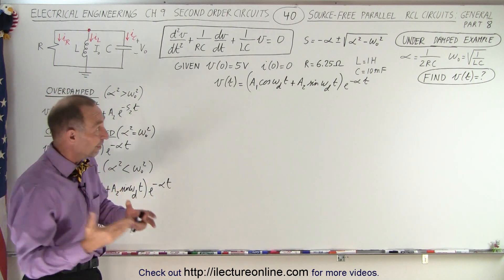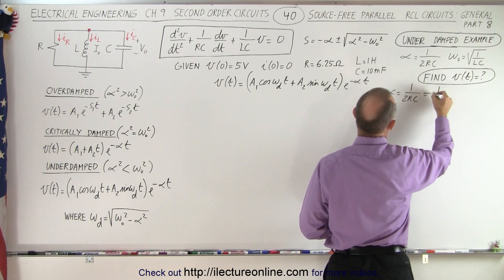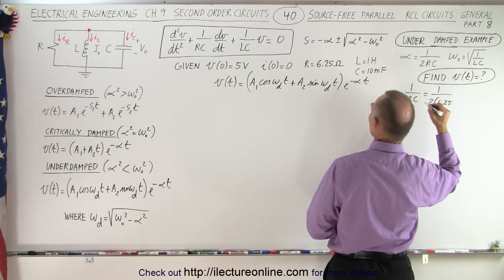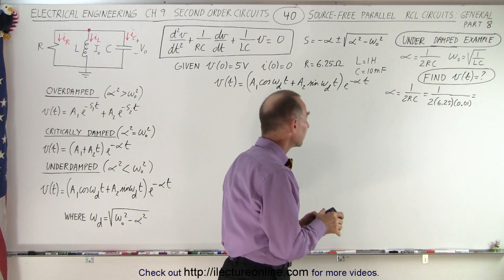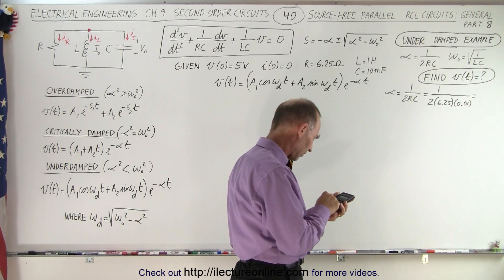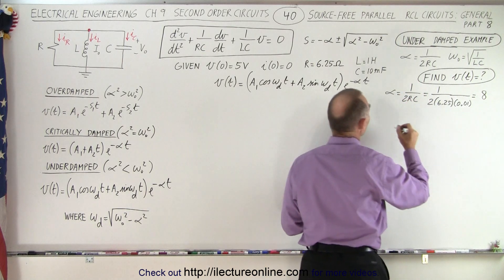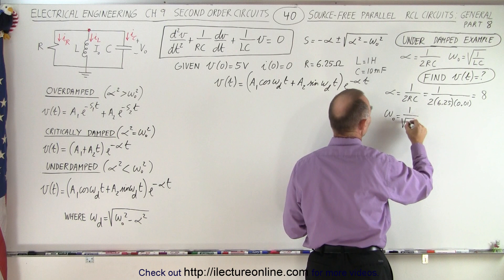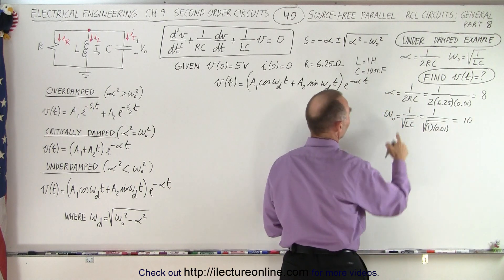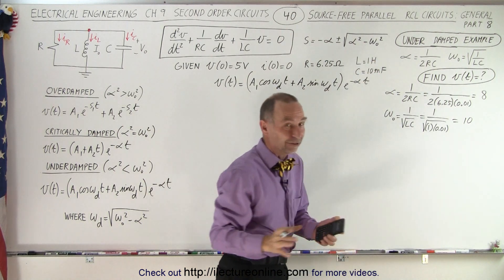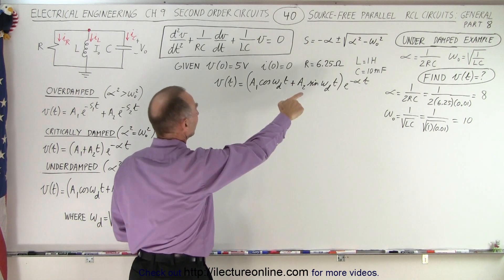Let's first find alpha, then omega, to verify we're dealing with an underdamped example. Alpha is equal to 1 over 2 times 6.25 times 0.01, which equals 8. Omega sub naught is 1 over the square root of LC, which is 1 over the square root of 1 times 0.01, equal to 10. Since alpha is smaller than omega naught, the discriminant is negative, confirming this is the underdamped case.